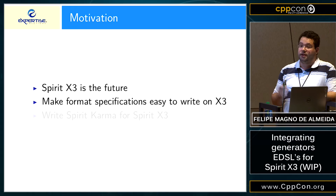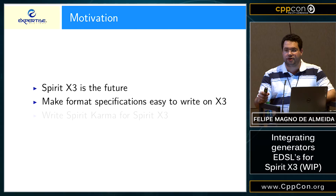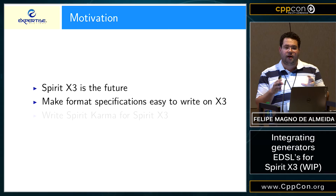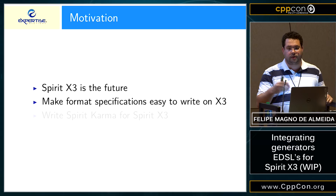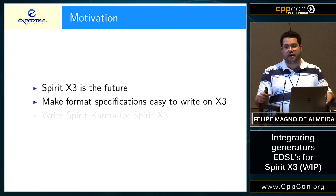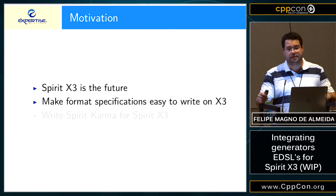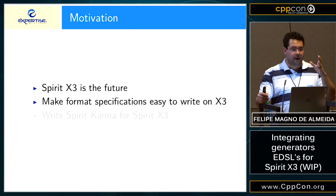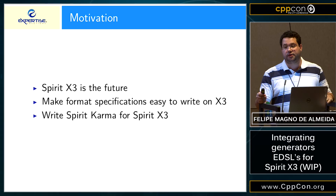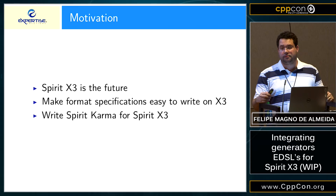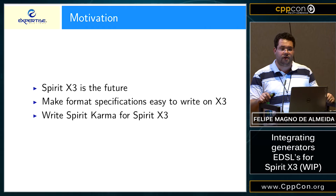Spirit X3 came with a much smaller compile-time footprint. Our objective is to make format specification easy to write on Spirit X3. When working with parsers and generators, for some formats like CORBA it's easier to think in terms of format specification rather than separate parsers and generators. We've even tried this with HTTP with some success. So we decided to write Spirit Karma for Spirit X3 — this is a work in progress, not complete, but we're already using tests from Boost Karma to verify our implementation of generators for Spirit X3.